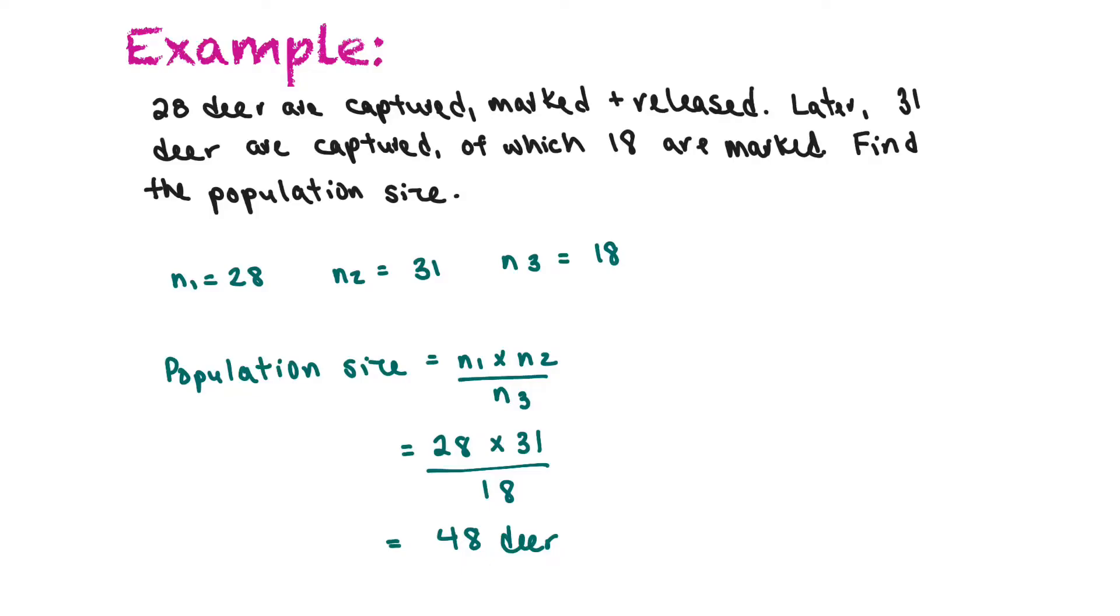So we'll work through a population example. 28 deer were captured and marked and released. Later, 31 deer are captured of which 18 are marked. Find the population size. So our n1 is 28. Our n2 is 31. That's our second sample and the number that were marked in that second sample is n3 and that was 18. So our population size is equal to n1 times n2 divided by n3 or 28 times 31 divided by 18 which equals 48 deer.